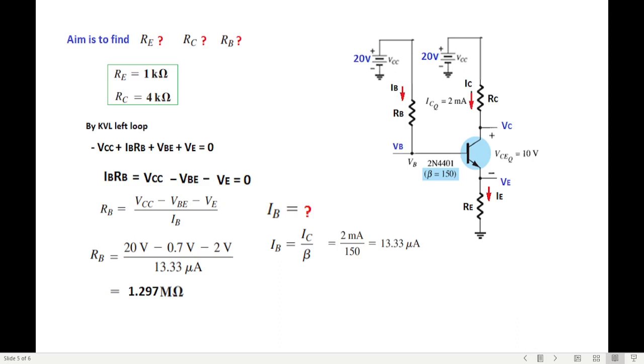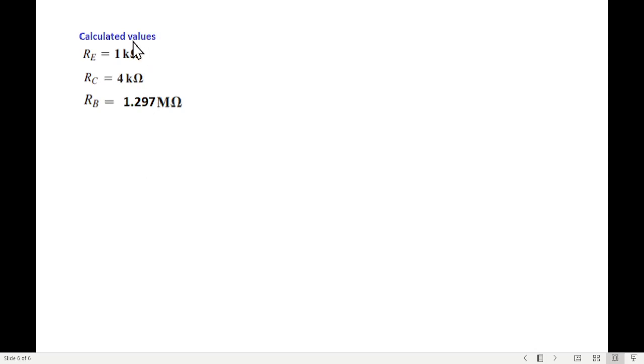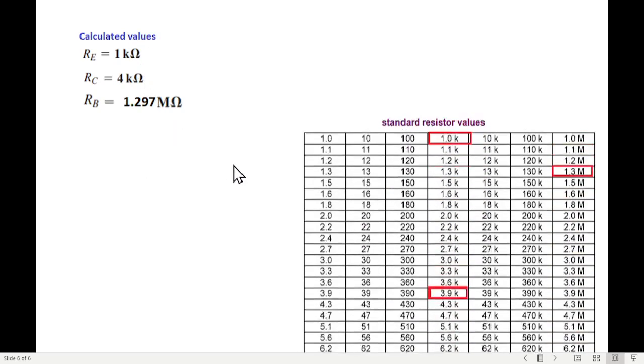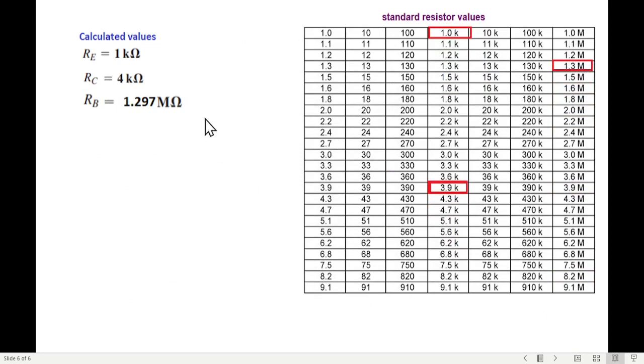Now in the book, he has not gone beyond, but in other examples he has done to find the standard value. So I'll follow that. The calculated values were these. Now we have to check with the standard table. This is the standard resistor table. 1k is available in the standard value. 4k is not available - either we have to use 3.9k or 4.3k. So 3.9k is the closest, therefore we will use 3.9k. And then 1.297 - we have to use 1.3 megohms. So these are the standard values that we use.